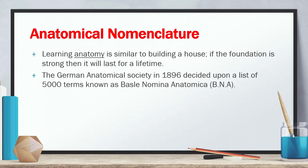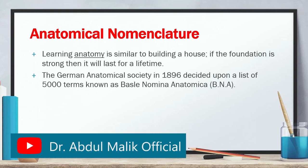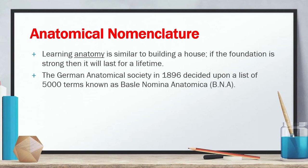Anatomy کو سمجھنا جیسا کہ گھر کو بنانے کے برابر ہے. If the foundation is strong, it will last for a lifetime. اگر صحیح طریقے سے nomenclature کو سمجھا جائے، یعنی anatomy میں جو نام ہم مختلف organs، tissues اور parts کے دیتے ہیں، اس کی study کو anatomical nomenclature کہتے ہیں. The German Anatomical Society in 1895 decided upon a list of five thousand terms known as Basel Nomina Anatomica. Basel was a city of Germany جس کے نام سے یہ نام دیا گیا۔